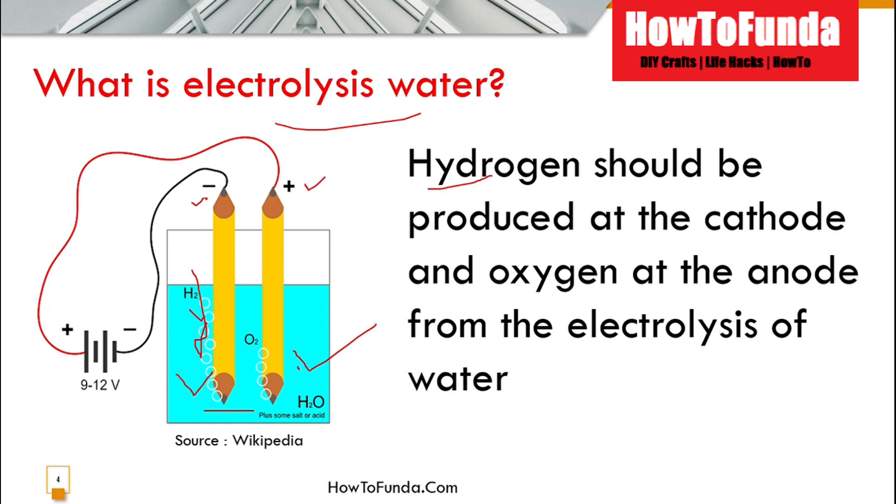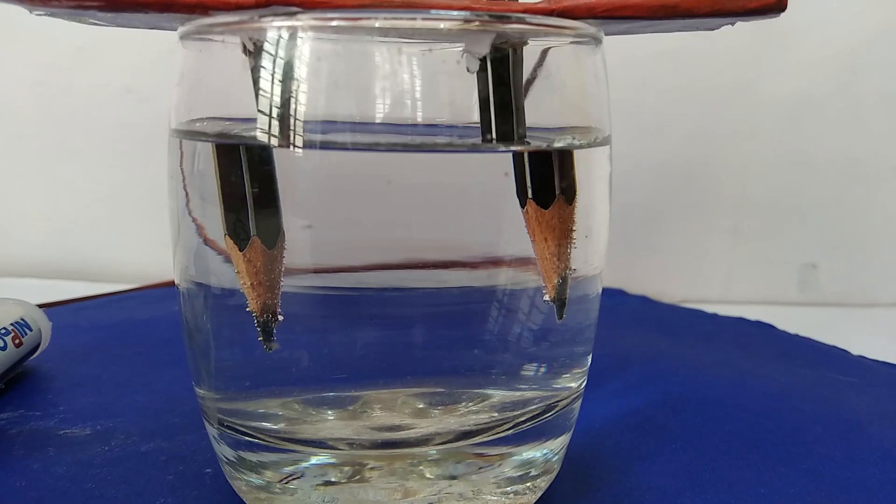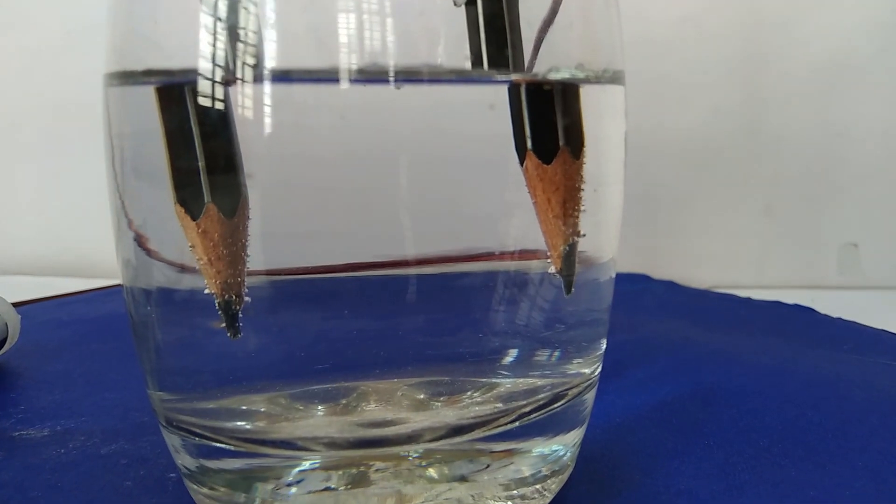A question normally asked during presentations is which chemical you will be using for electrolysis of water. Normally we can use sulfuric acid or salt to perform electrolysis of water.